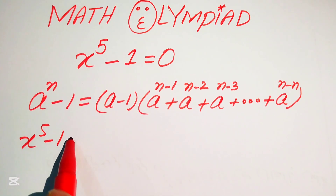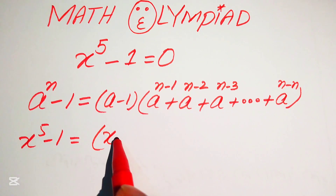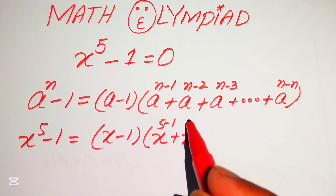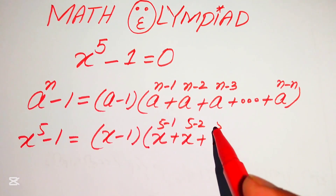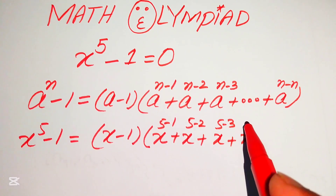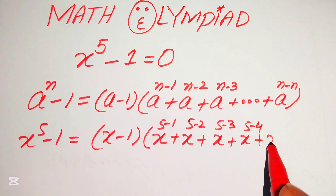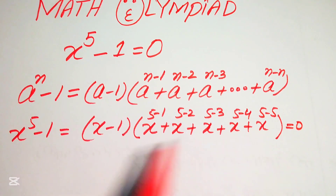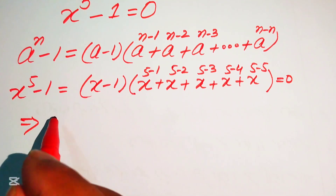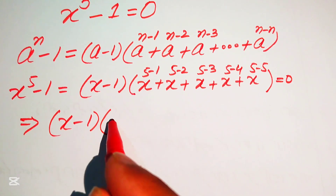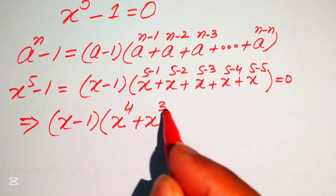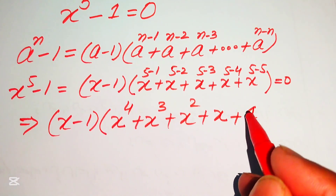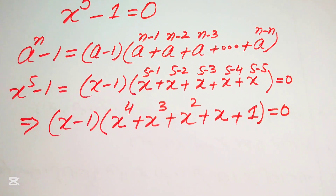Following this pattern, x to the power of 5 minus 1 is written as x minus 1 times of x to the power of 4, plus x to the power of 3, plus x squared, plus x, plus x to the power of 0. Since x to the power of 0 equals 1, this whole equation equals 0.